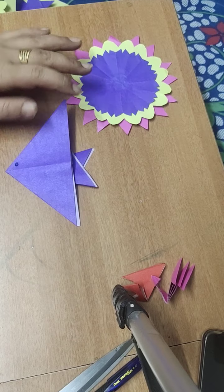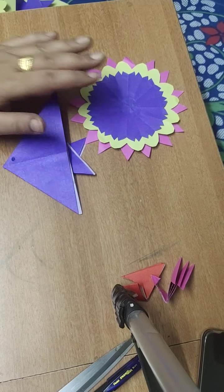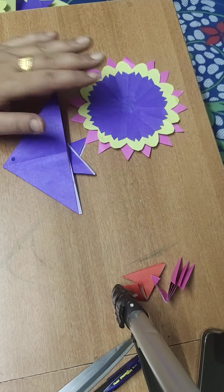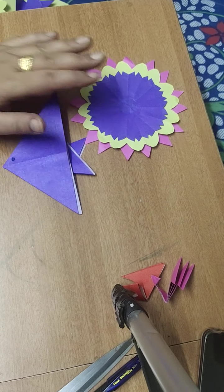Fish. You can paste an eye or you can draw an eye here. Here is your fish ready. Clear? I hope these two are clear among you. You can make a hanging, you can hang all these fishes, colorful, and make a wall hanging or a circular hanging.